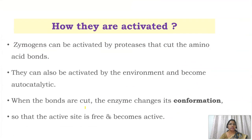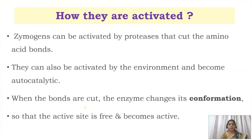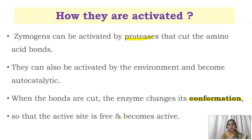Zymogens can be activated by proteases, which cut the peptide bonds to release the active forms of the enzymes. They can also be activated by the environment, and sometimes they become autocatalytic. When the bonds are cut, a conformational change takes place in the enzyme structure so that the active site is exposed, making the enzyme functional.